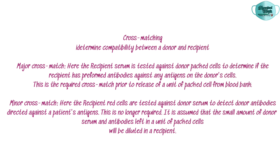Cross matching is done to determine compatibility between a donor and recipient's blood, and also in organ transplantation. In major cross matching, the recipient's serum is tested against donor packed cells to detect if the recipient has preformed antibodies against any antigen on the donor's cells; this is required prior to release of a unit of packed cells from the blood bank. In minor cross matching, the recipient's red cells are tested against donor serum to detect donor antibodies against patient antigens; however, this is no longer required, as the small amount of donor serum and antibodies remaining in a unit of packed cells is assumed to be diluted in the recipient.